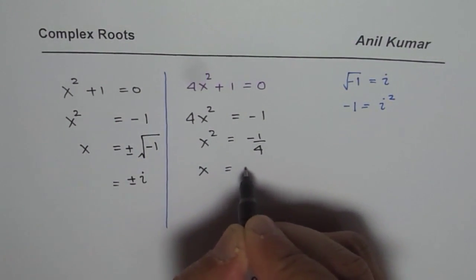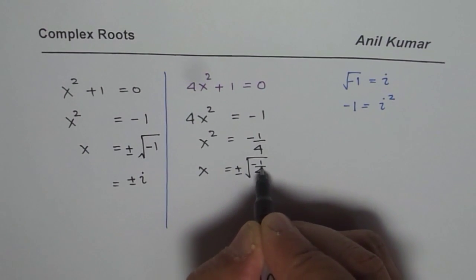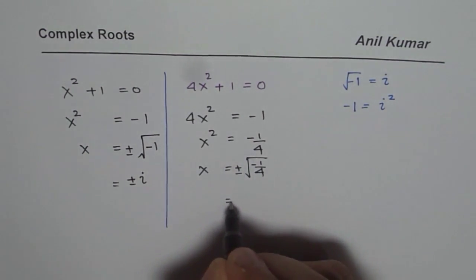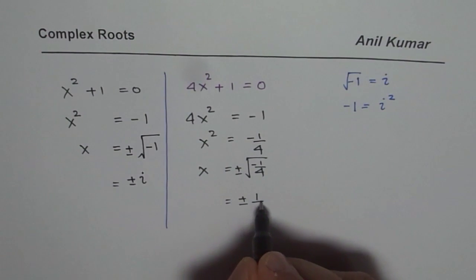And x will be equals to square root of plus and minus, of course, minus 1 over 4. Now that gives us plus and minus, square root of minus 1 is i, and square root of 1 over 4 is 1 over 2. So we can get 1 over 2i.